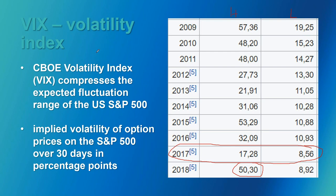The VIX shows the range of how volatile the S&P 500 stocks are. Going deeper into the definition, it shows the implied volatility of all option prices on the S&P 500 over the last 30 days. It gives you an example of how volatile all the stocks are, because the implied volatility of an option is the same as the expected fluctuation range of the S&P 500, expressed in percentage points.